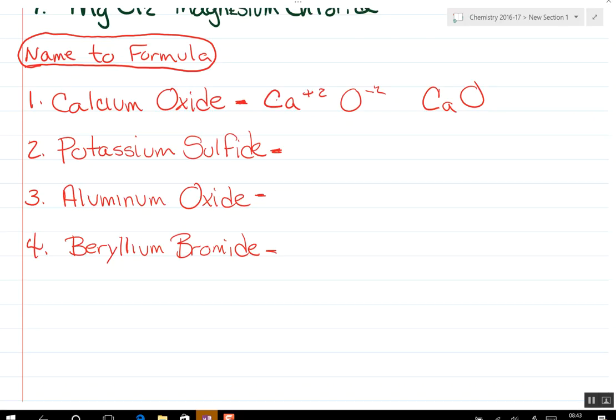Then I'm going to pick on Gavin or Moomy for the second one. They said K2S. Is that right? No. Potassium is plus one, S is minus two. So you need another potassium. And so it's going to be K2S.